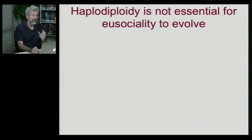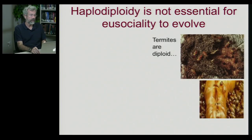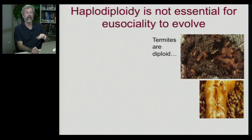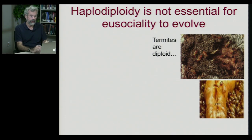Although haplodiploidy makes it easier for ants and bees to form eusocial societies than other species, haplodiploidy itself is not essential for the evolution of eusociality. There are organisms like termites that have colonies every bit as complicated as those of ants and bees, but termites are diploid, just like normal insects. You have a queen who is a ridiculous egg factory with masses of workers going out and doing the jobs.